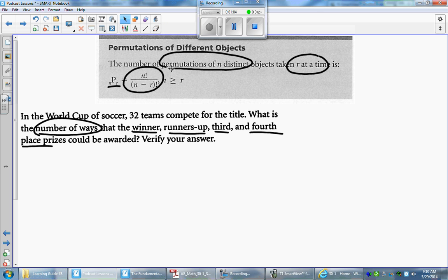So there's two ways you could think this out. First of all, you can use a fundamental counting principle. So we have four places we need to fill in. So we have the winner, the runner-up, the third and the fourth place.